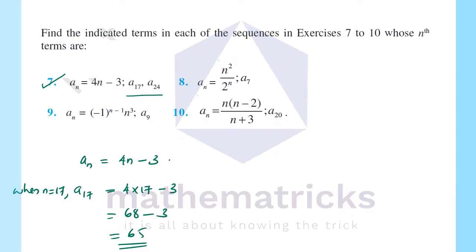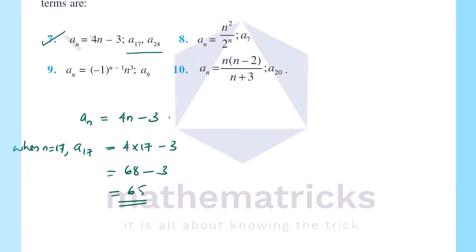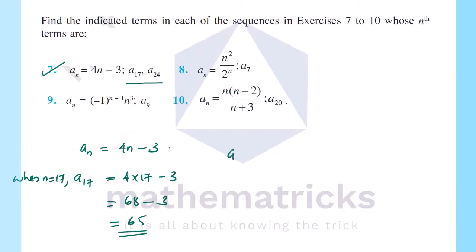Now for a₂₄: a₂₄ = 4 × 24 - 3 = 96 - 3 = 93. So a₂₄ is equal to 93.